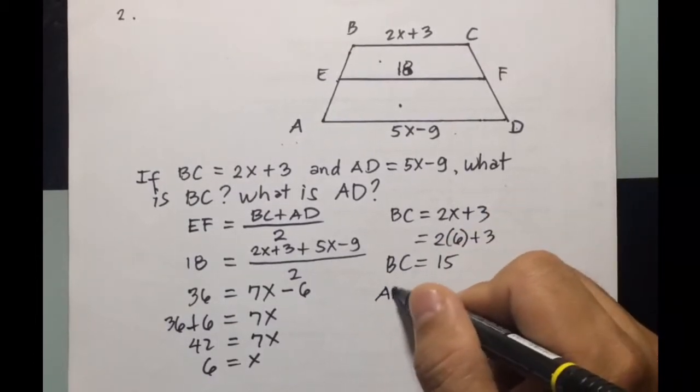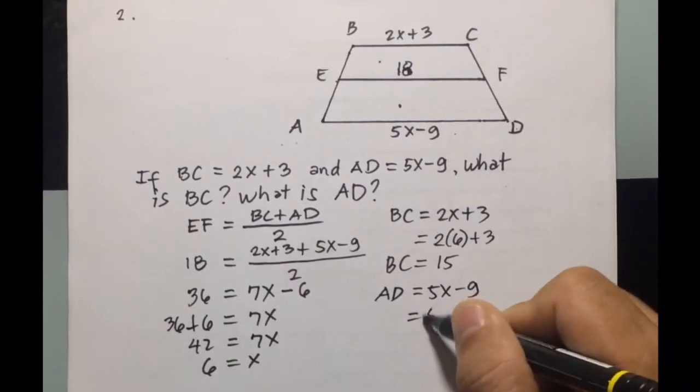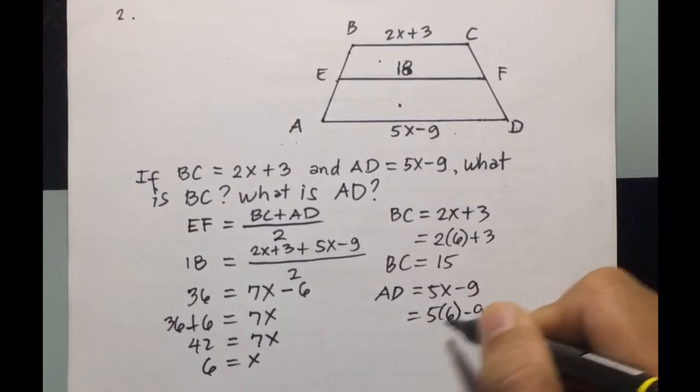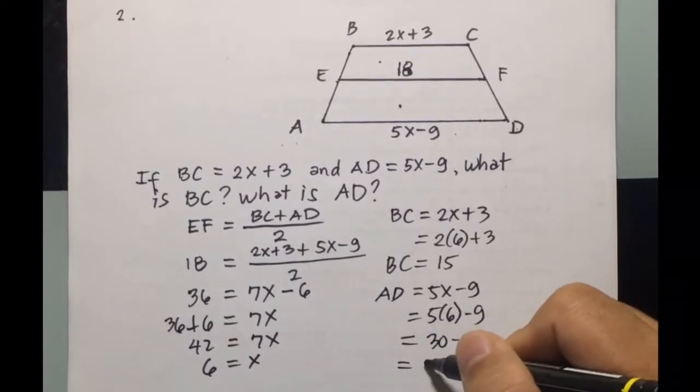AD is equal to 5X minus 9, so 5 times 6 minus 9, that will be 30 minus 9 equals 21.